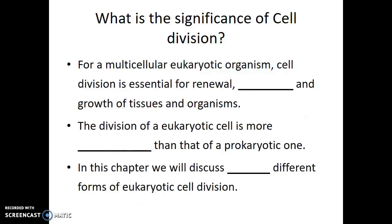Binary fission is the simplest form of cell division. In contrast, for a multicellular eukaryotic organism, each time a cell divides doesn't mean that that organism has reproduced. But this cell reproduction is essential for renewal, repair, and growth of tissues and organisms. You are larger now than you were when you were born, in main part because of this cell division — because your number of cells has increased through cell division. Multicellular organisms do require specific types of cell division for reproduction to occur.